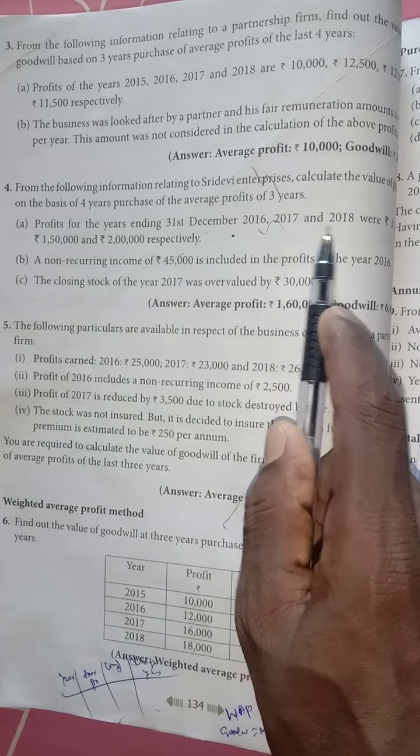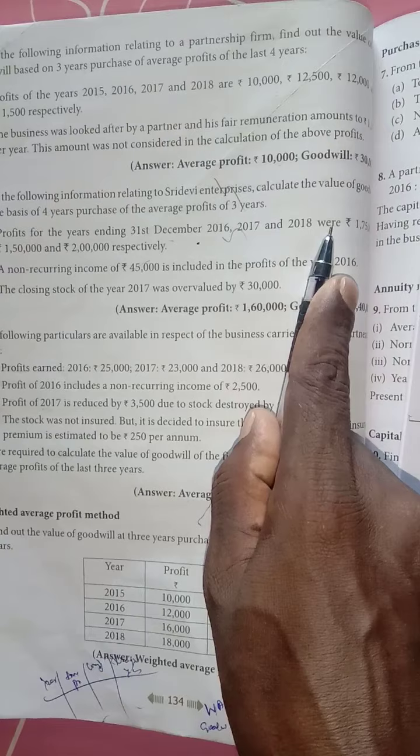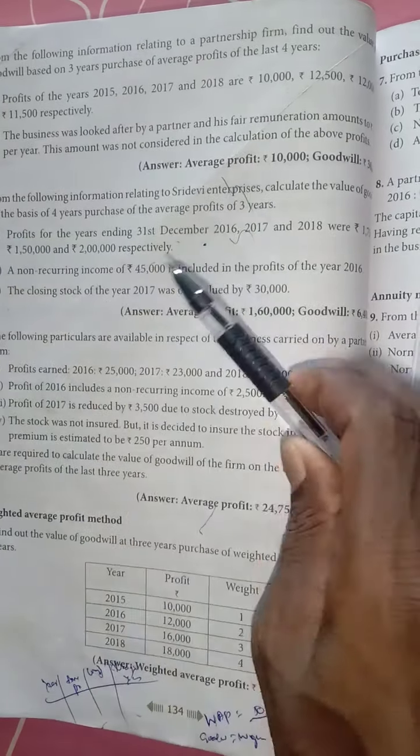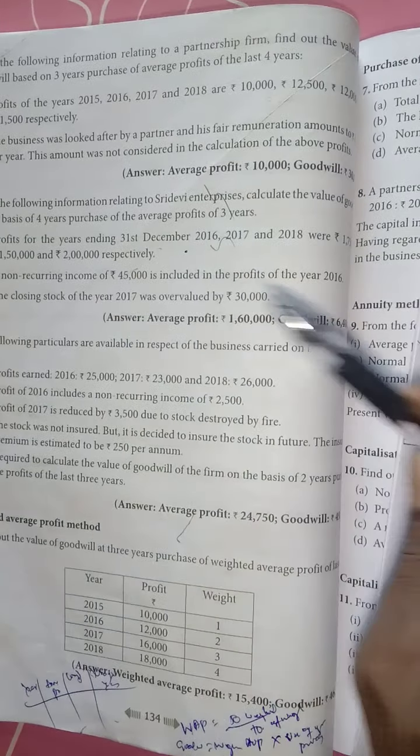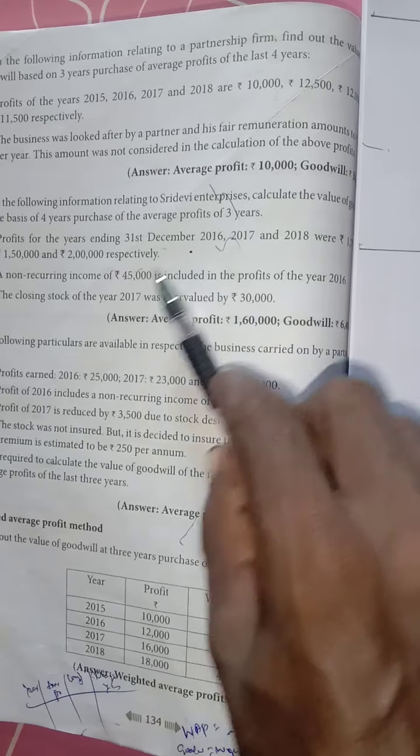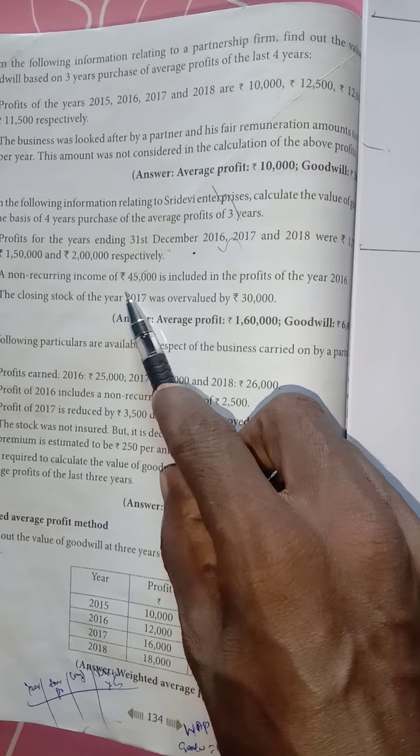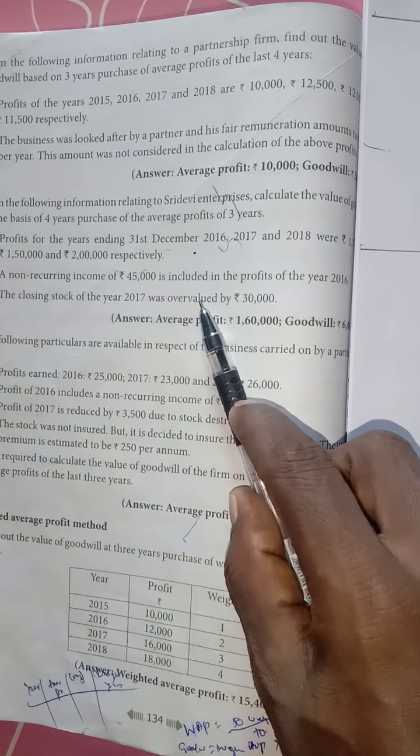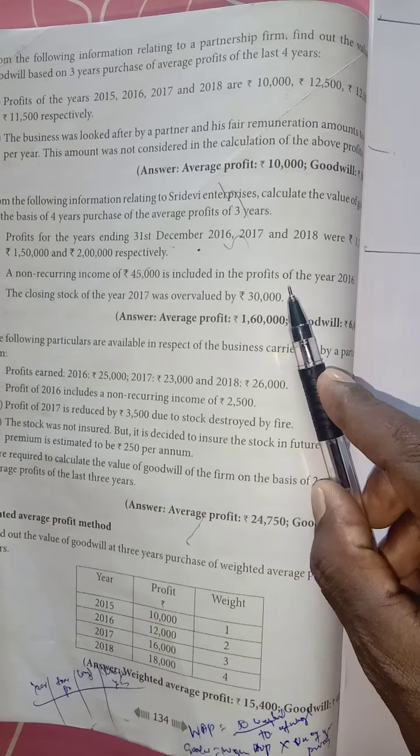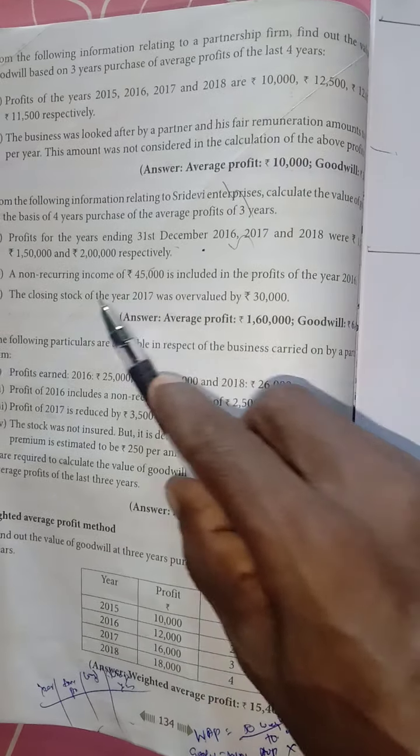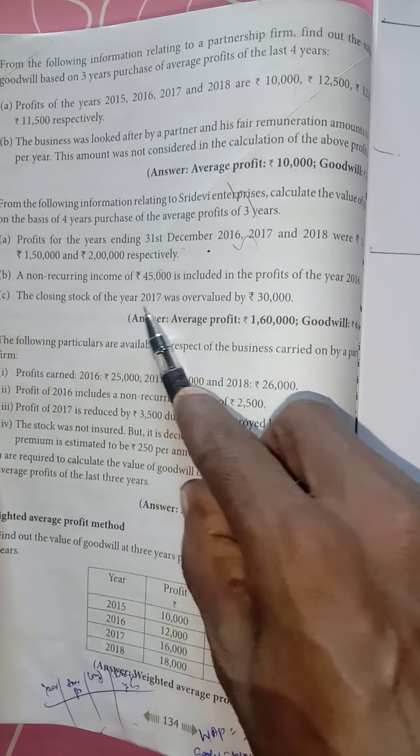Profit of the year 31st December 2016, 2017, 2018 are ₹1,75,000, ₹1,50,000, and ₹2,40,000 respectively. The data includes non-recurring income of ₹45,000 included in the profit of the year 2016.